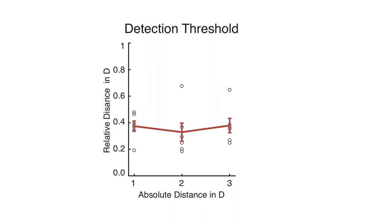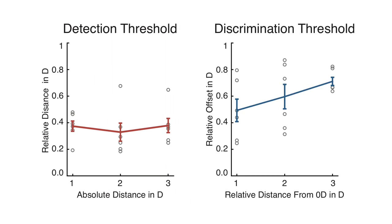We also estimate discrimination thresholds, or just noticeable differences, of ocular parallax. The results demonstrate that people can differentiate between very small amounts of gaze-contingent parallax, suggesting that ocular parallax might in fact serve as a depth cue.